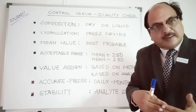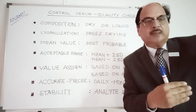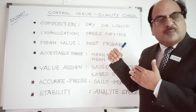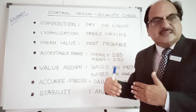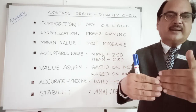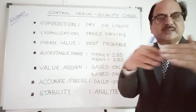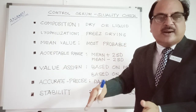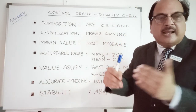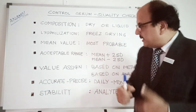Values are also assigned based on the analyzer — Beckman Coulter, Hitachi, Abbott, and others. If your analyzer is listed, you simply use the value specified for that analyzer, since it uses a specific set of reagents. If your analyzer is not in the manufacturer's list, you take the general method-based mean value and match it to your reagent methodology as per your technical insert.